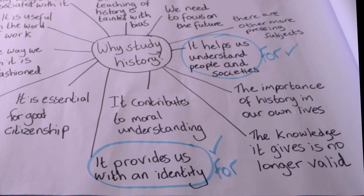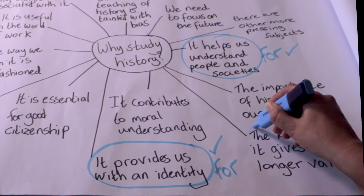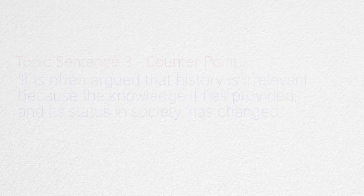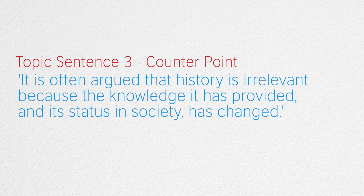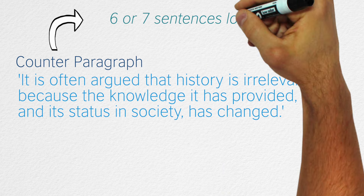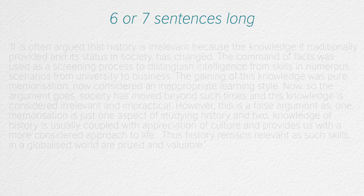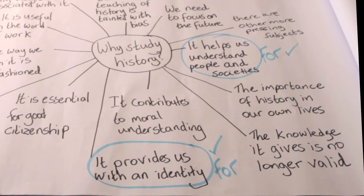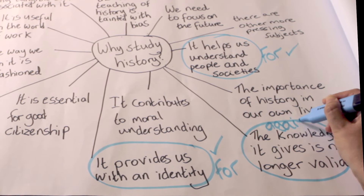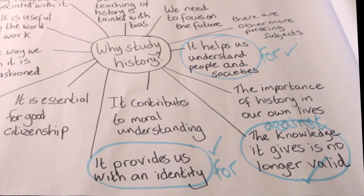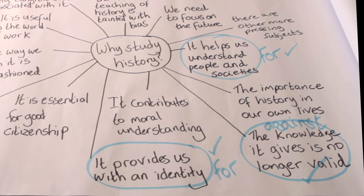Let's go back to the first video where we brainstormed the essay question. Here's the counter argument we chose and the topic sentence. Your counter paragraph will be slightly longer than the others — about six or seven sentences. Firstly, you need to make a statement that disagrees with the thesis statement. Looking back at our plan, this point opposes the thesis. Make sure the topic sentence of this paragraph is disagreeing with the thesis — you are turning against your opinion.